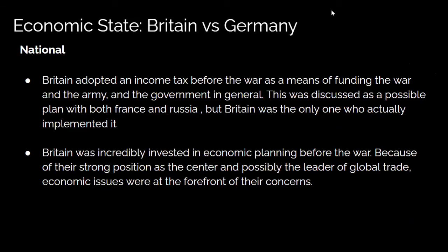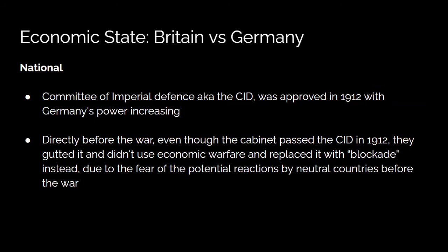Nationally, Britain adopted an income tax before the war as a means of funding the government, which was somewhat new for the time. It was discussed as a possible plan with France and Russia, but Britain was the only one who actually implemented it. Britain was also incredibly invested in economic planning before the war. The Committee of Imperial Defense, known as the CID, was approved in 1912 with Germany's power increasing, dedicated to using economic warfare against other countries. However, directly before the war, Britain gutted this committee and replaced it with a blockade plan instead, because they were scared of potential reactions by neutral countries. And that's Great Britain before World War I.